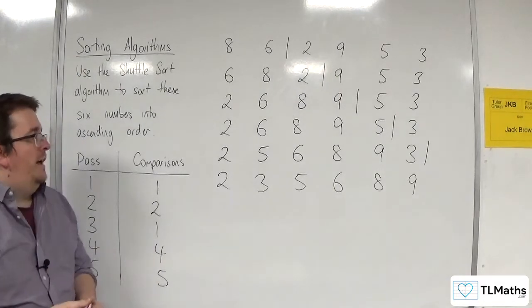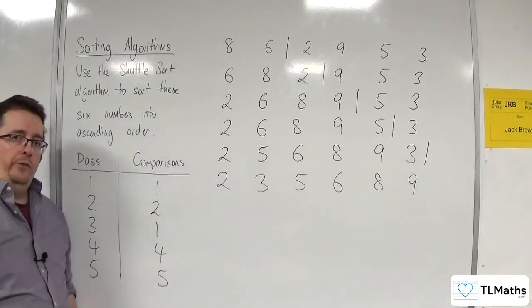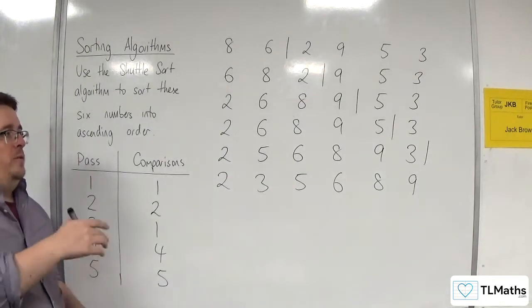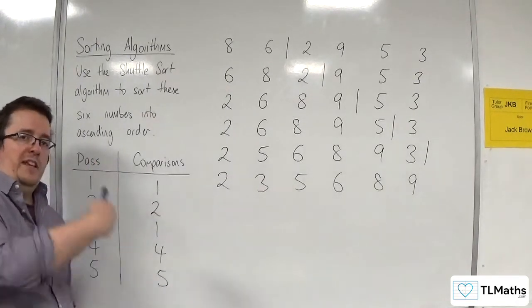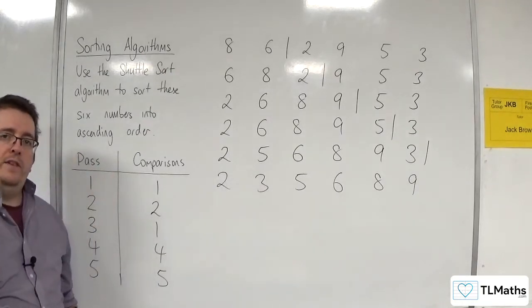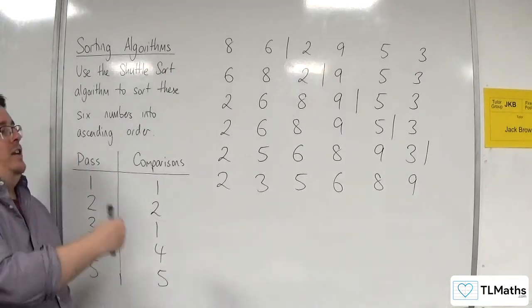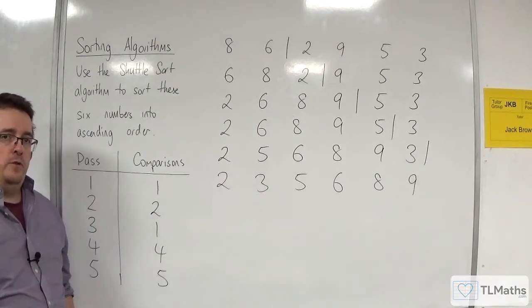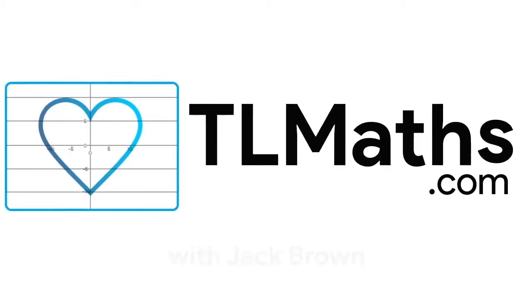And so that is how we can perform a shuttle sort. Essentially what you're seeing is that each time you add a new number into the list, each time you go down a row into the next pass, it shuttles the next number into the correct position.